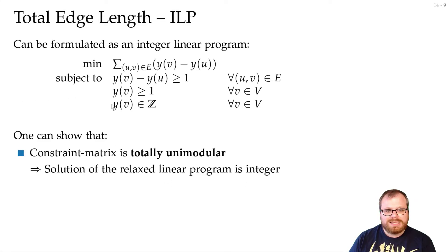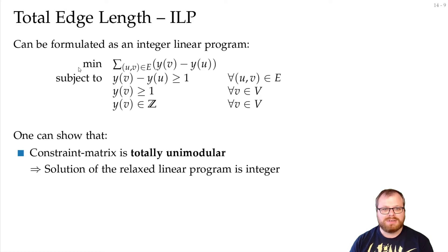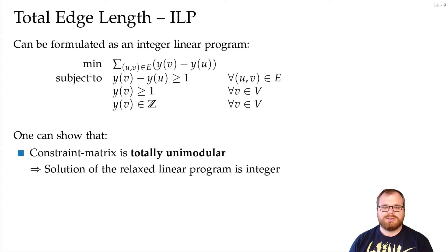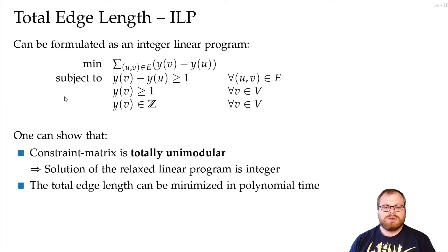If we drop the integrality requirement and just solve the relaxed linear program, we can do so efficiently in polynomial time. And since the matrix is totally unimodular, we even get an integer solution from the relaxation. So for this special ILP, we just take the relaxation — require everything to be at least zero rather than integer — and obtain an optimum integer solution, minimizing the total edge length in polynomial time.